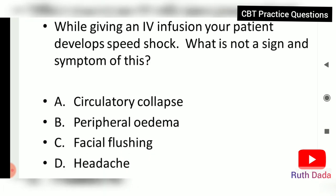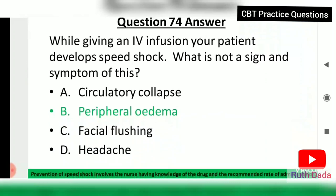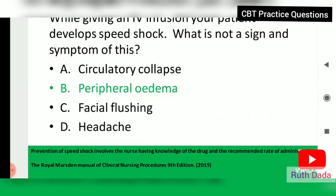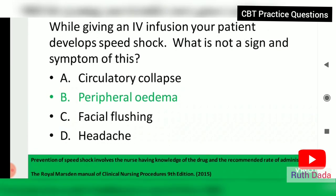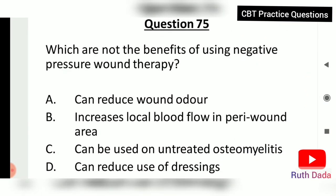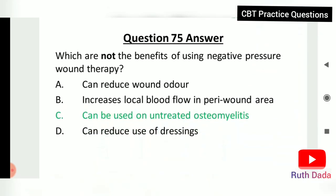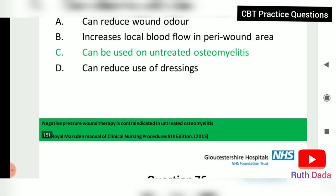Prevention of speed shock involves the nurse having knowledge of the drug and recommended rates of administration. Question 75: Which is not a benefit of using negative pressure wound therapy? It can be used on untreated osteomyelitis — this is not a benefit; it is in fact contraindicated in untreated osteomyelitis. Benefits include reducing wound odor, increasing local blood flow in the peri-wound area, and reducing use of dressings.